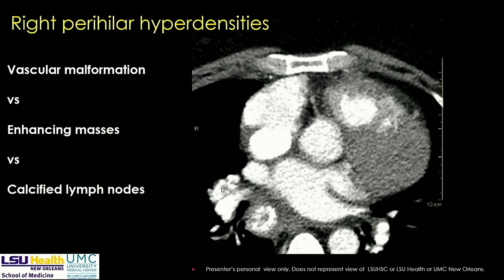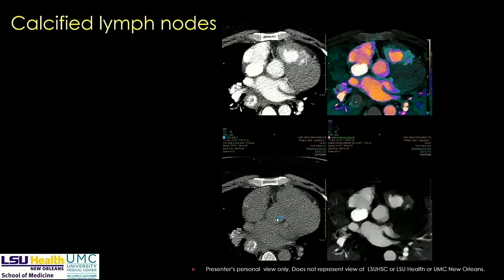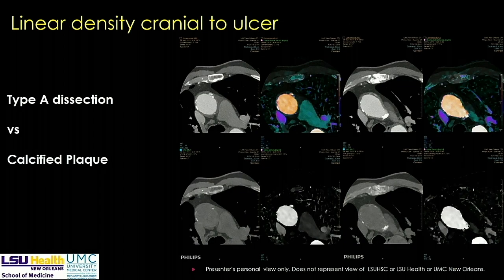Another patient presents with hyperdense lesions. You could always go back and do a non-contrast CT to determine if these are calcium, vascular malformations, or enhancing masses. But if you have spectral CT data available, just load it up. On virtual non-contrast, it is clearly calcium, not iodine. If someone is still skeptical, go to the iodine map — the areas are dark, showing no iodine. These are calcified lymph nodes.